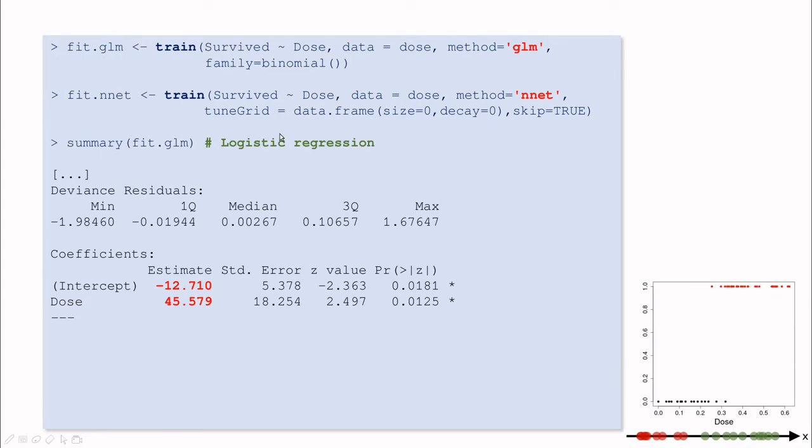So let's train both methods, and then the summary of logistic regression, if you remember, is giving us the intercept and the coefficient proportional to the dose. This is the bias, and this is the weight.